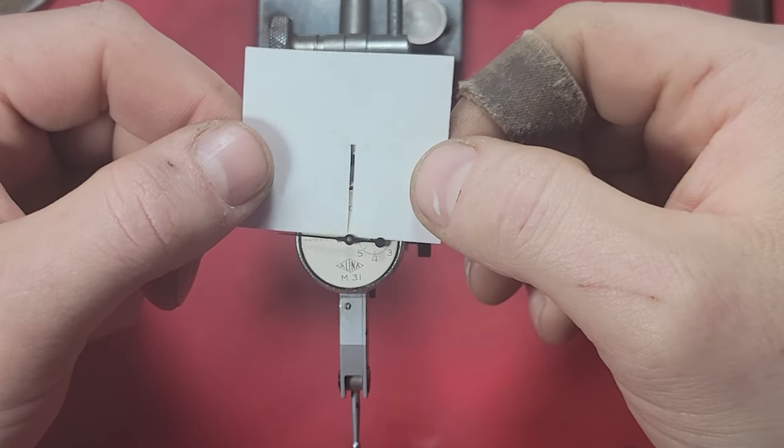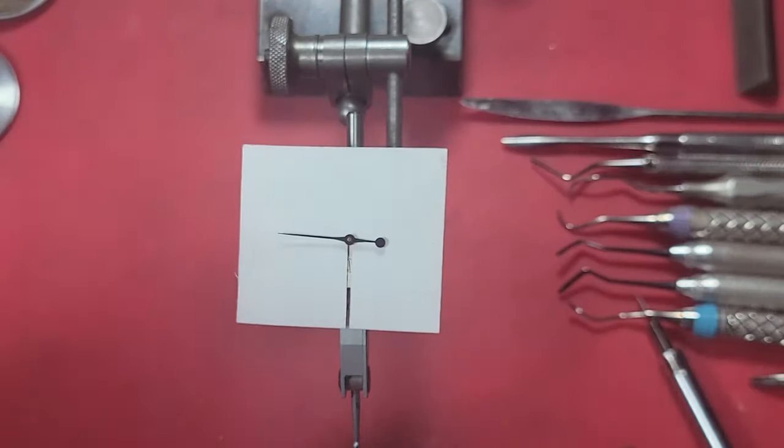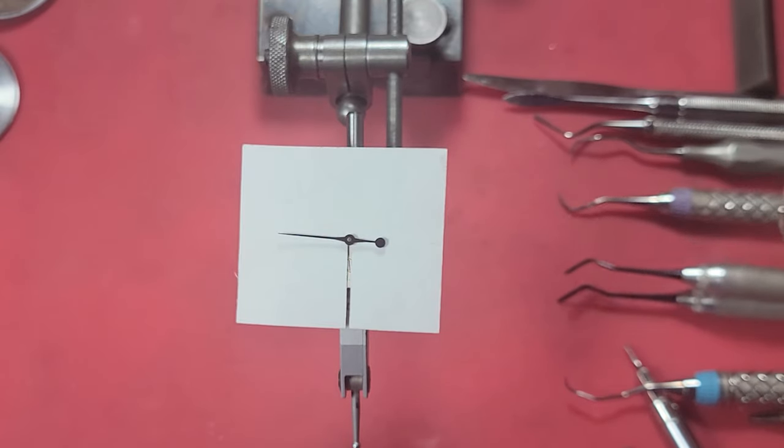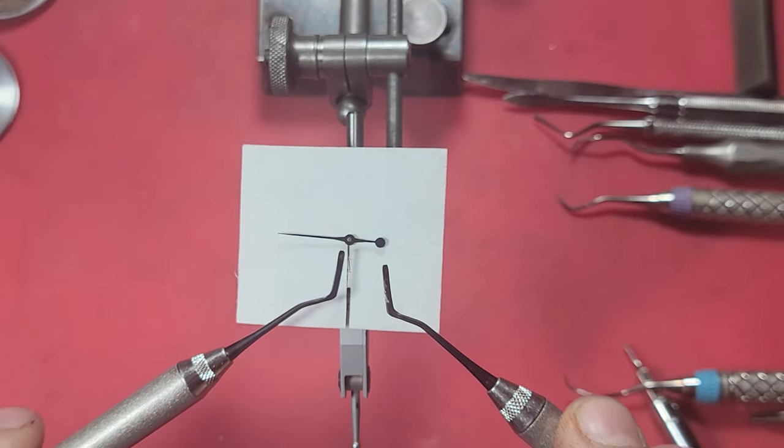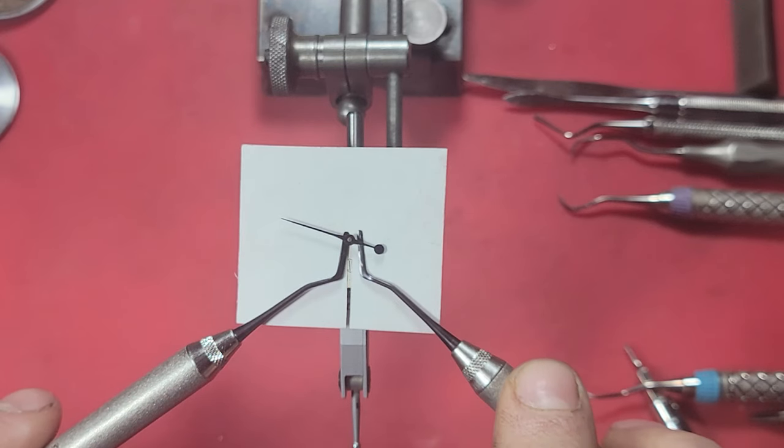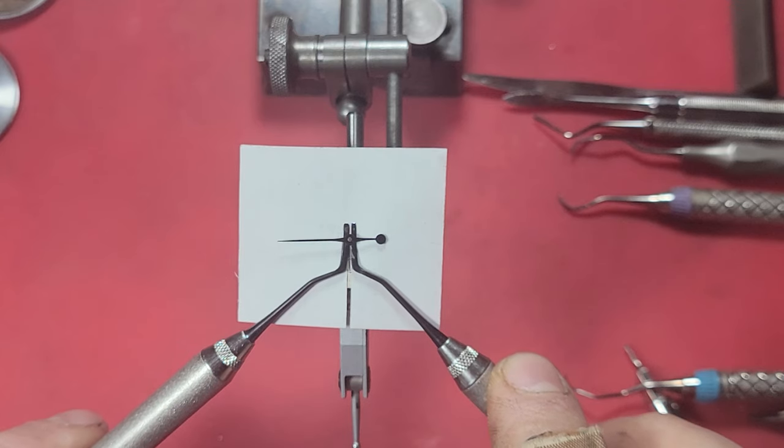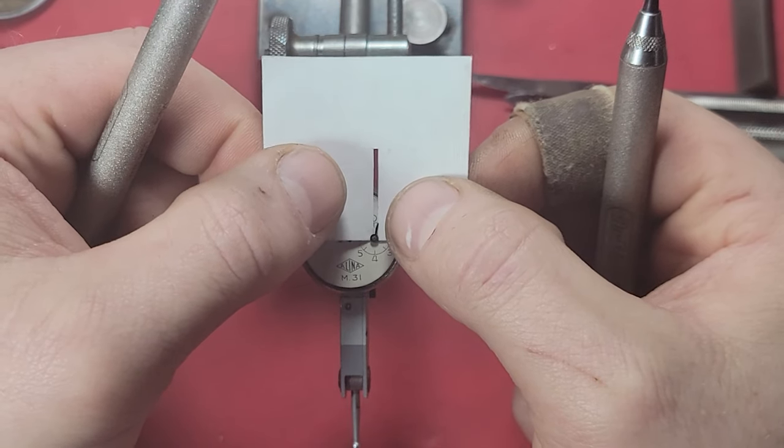Next is removing the hands. In order to protect the face, I'm going to put this slip of paper with a small slit in it behind them so that I don't scratch the already aged patina-looking face on the indicator. I'm using these two dental tools, just basically like pry bars, underneath the hand so that I can slip it right off of the shaft that it is pressed onto. It comes off pretty easily.